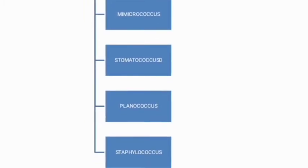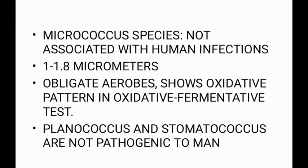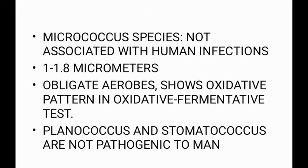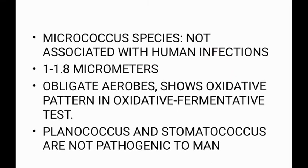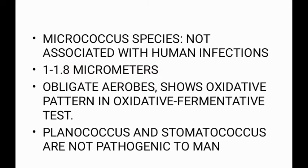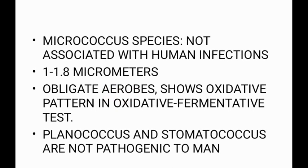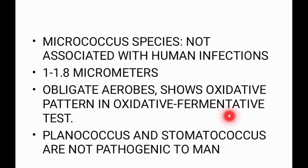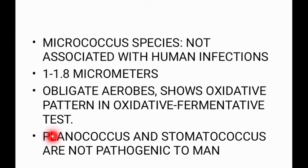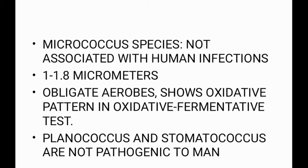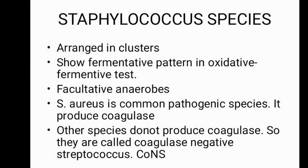Micrococcus species are generally not associated with human infections. Their diameter is about 1 to 1.8 micrometers, they are arranged in tetrads, and they are obligate aerobes showing an oxidative pattern in the oxidative-fermentative test. Planococcus and Stomatococcus are non-pathogenic and do not cause human infections. Staphylococcus species, by contrast, are arranged in clusters and show a fermentative pattern in the oxidative-fermentative test.